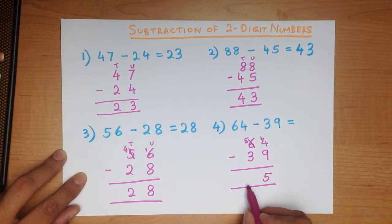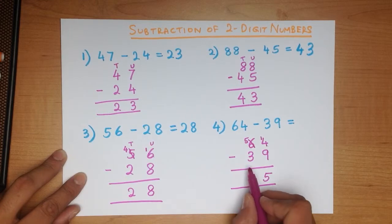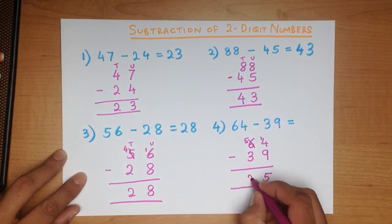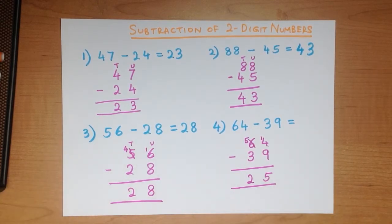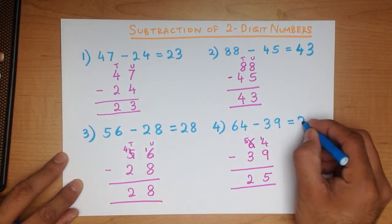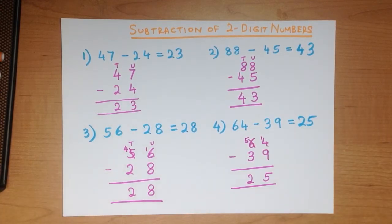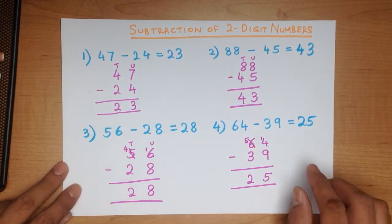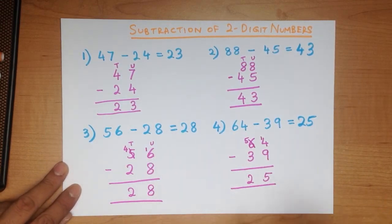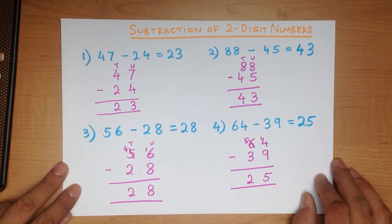Now we subtract the tens column. What is 5 minus 3? That's right, it is 2. And we have our answer — 64 minus 39 is 25. This looks a little bit difficult if you're doing it for the first time, but practice with a few numbers and you'll soon get the hang of it.